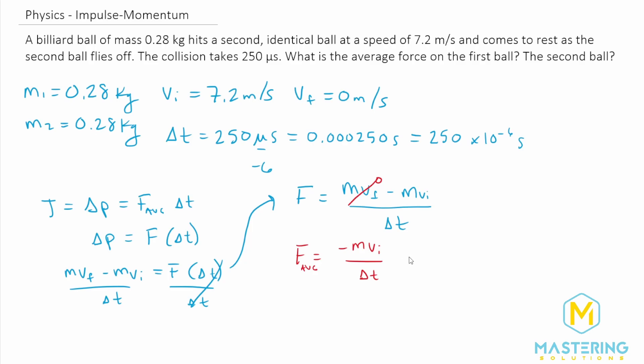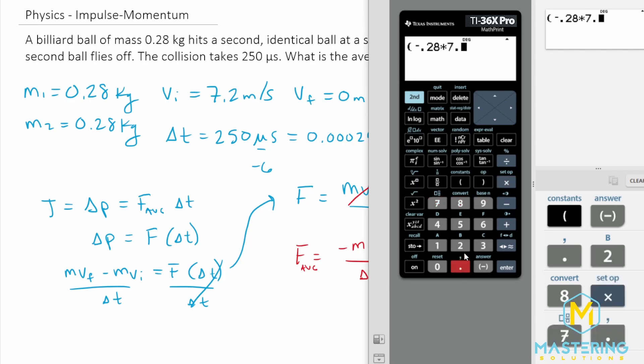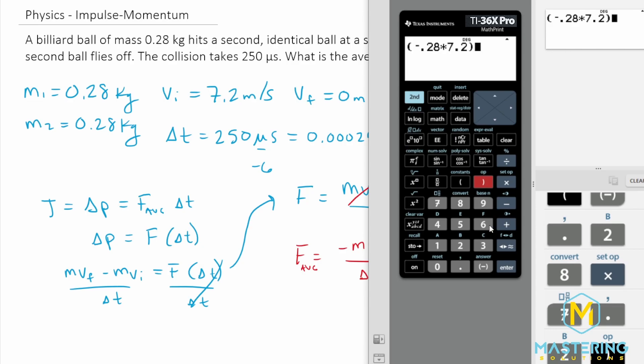So now all we have to do is plug in our variables. We have negative, the initial mass is 0.28 kilograms times 7.2 meters per second, and we're going to divide all of that by the time, which we said was 250 times 10 to the negative 6 seconds.